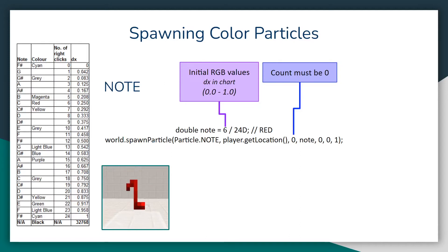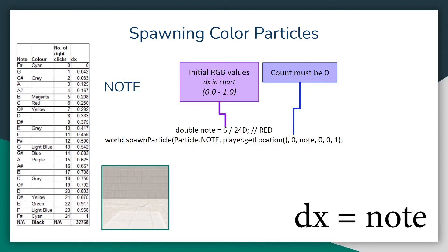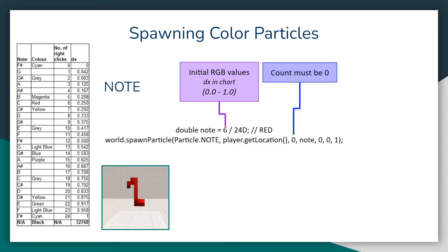Another cool thing we can do is create custom colored note particles. With the spawn particle method call, we set the count to be equal to 0 and set the X offset parameter to be our note value. There's a table that tells us the DX value associated with every single note color — for example, if you want a red C note, you set DX to 0.25, or equivalently 6 divided by 24. The Y and Z offset parameters should be 0, and you tack on a 1 at the very end. Note values must be between 0 and 1.